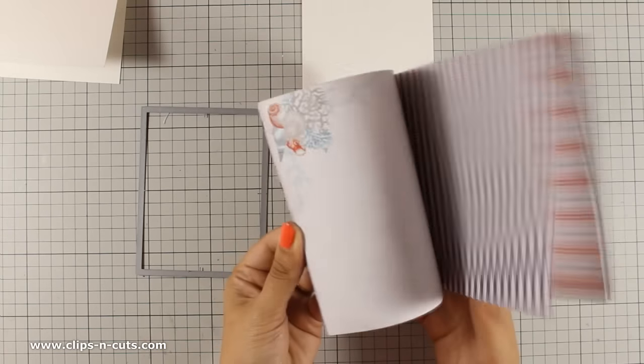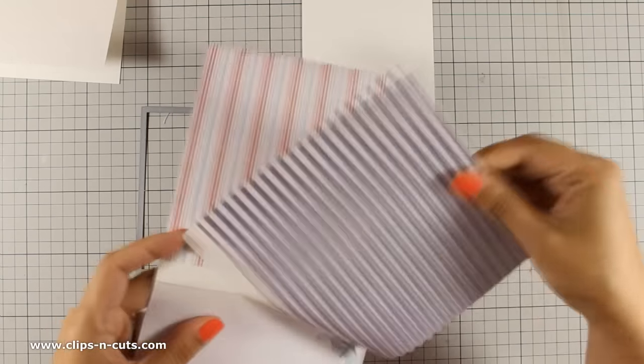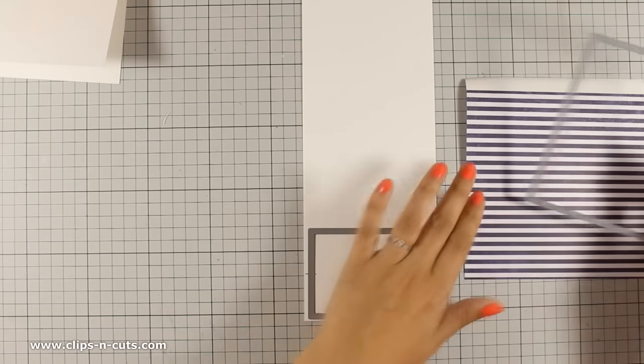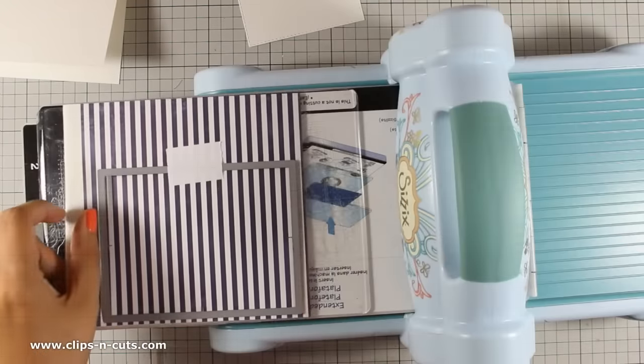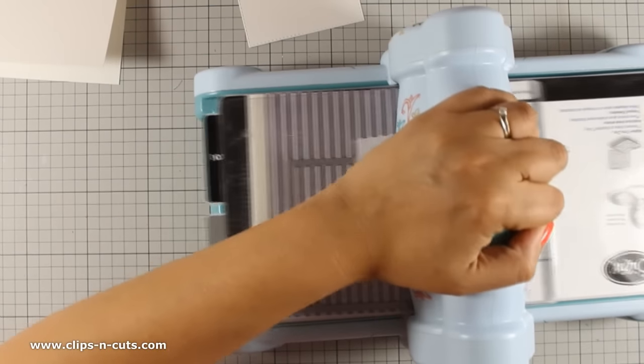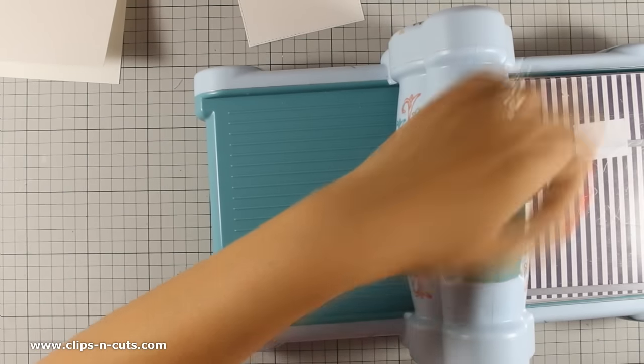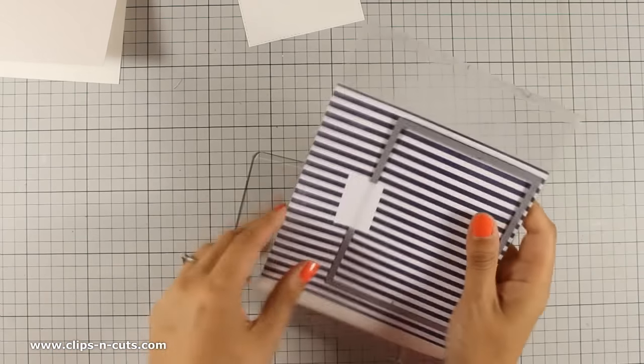So I am going to cut out one of those rectangles and also I will be using this striped paper and I will be cutting out a bigger panel. I am using my Sizzix die cutting machine to cut out all the pieces and then I can go ahead and start assembling my card.